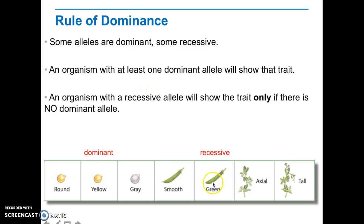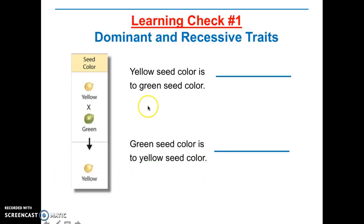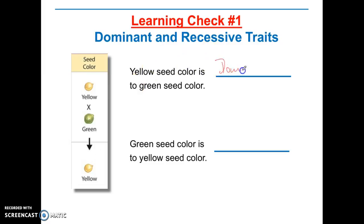For example, green pods were actually recessive. Learning check: yellow seed color is dominant or recessive to green? If you cross yellow and green, the offspring is yellow — so yellow is dominant to green, and green is recessive. The reason is because there is no green in the offspring.